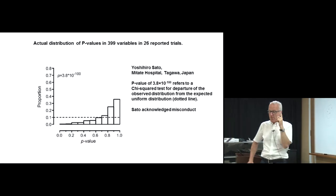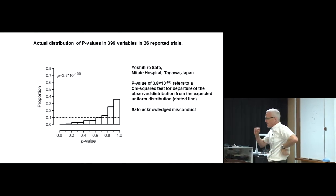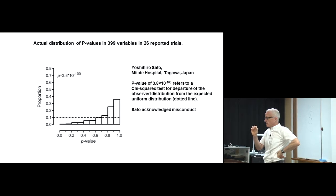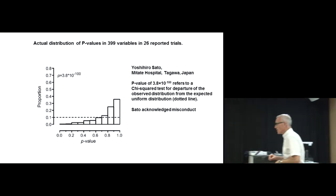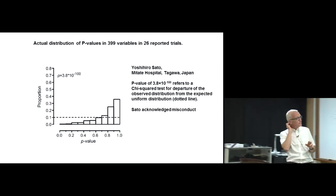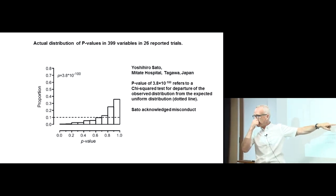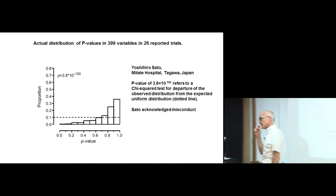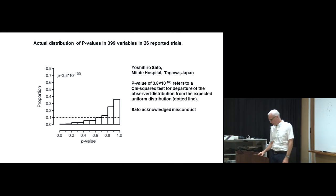Then he acknowledged he had made them all up. He'd made up 33 randomized trials. Basically he sat in his office and put numbers into his table of baseline variables — maybe he had a calculator. They were all fabricated, and it was discovered because of this analysis of baseline p-values. Baseline values are really important in detecting scientific fraud.